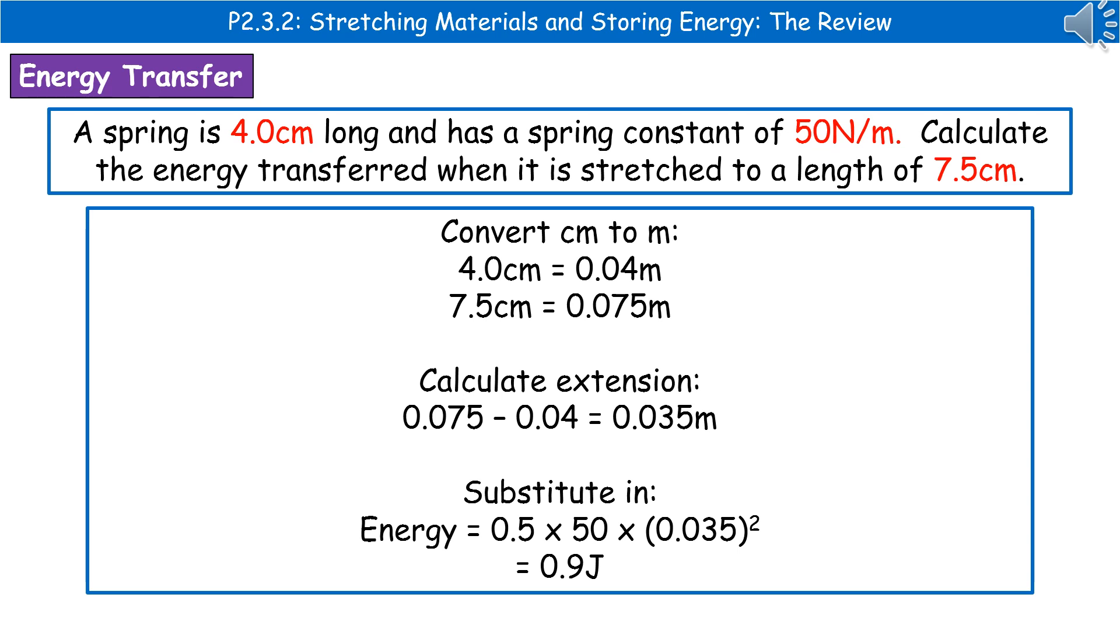Using our datasheet, we then find our relevant formula, which is energy equals 0.5 times the spring constant times the extension squared. Then we substitute in our values, so 0.5 times 50 times 0.035 squared. Put that into our calculator, and we get our answer of 0.9 joules.